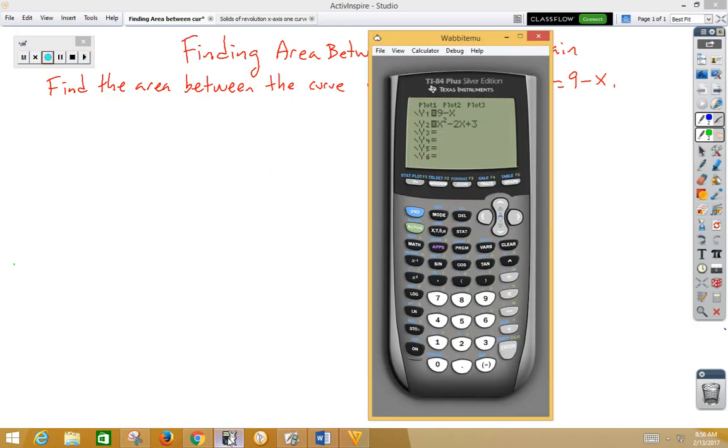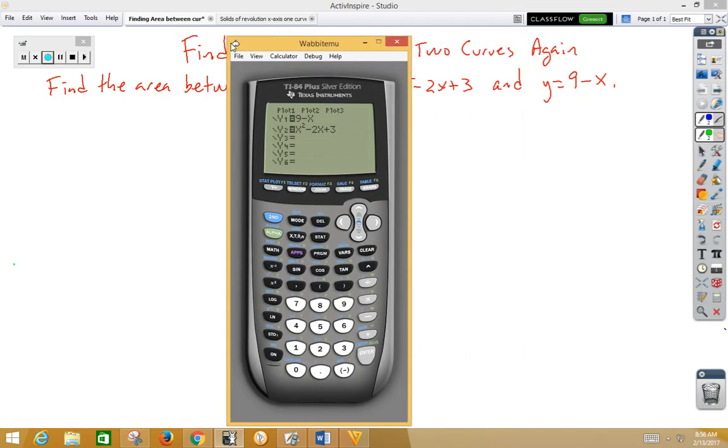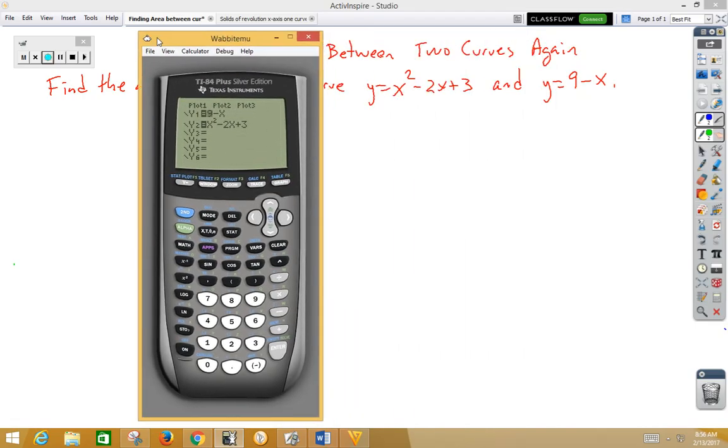So we go ahead and type into our calculator. I put the line first and the parabola second. It doesn't really matter which one is which. I'm going to zoom six just to get a normal picture. So let's zoom six that. We get the line and we get the parabola.